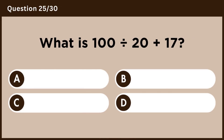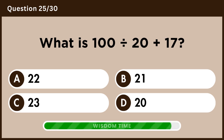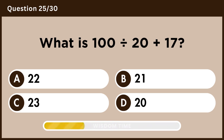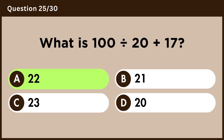What is 100 divided by 20 plus 17? Answer A, 22.